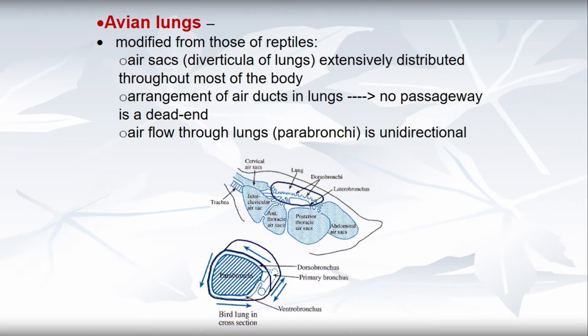Lungs in birds — that is, avian lungs — are unique in architecture and greatly modified due to their aerial mode of life. Lungs are small, compact, and spongy, and only slightly capable of contraction and expansion. They are placed outside the coelom in pleural cavities. They give out several thin-walled membranous sacs that invade most parts of the body, forming a network of air capillaries.